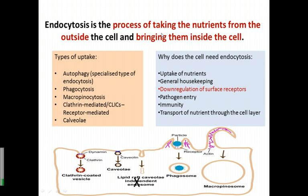Endocytosis is the process of taking nutrients from outside the cell and bringing them inside. Other types of uptake include autophagy, phagocytosis, macropinocytosis, clathrin-mediated receptor-mediated endocytosis, and caveolae. The reasons a cell needs so many uptake mechanisms include: receiving nutrients for general housekeeping, downregulation of surface receptors, pathogen entry, immunity, and transport of nutrients through the cell layer. For macropinocytosis, the cell ingests by forming a protrusion facilitated by actin.